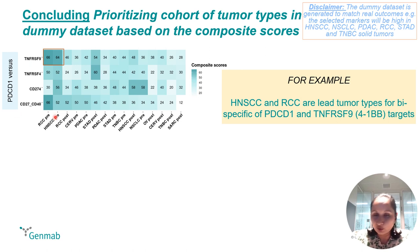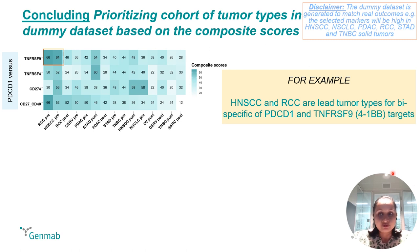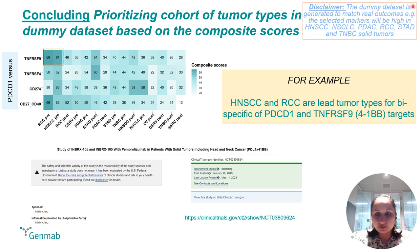If we pick 41BB compared to PDCD1, we can easily identify head and neck and kidney from this plot and say these are the lead tumor types for this combination of bispecific antibodies, which also matches what we know from ongoing clinical trials. Going back to the disclaimer: we made it match like this so that we have this outcome where head and neck comes up for this combination.